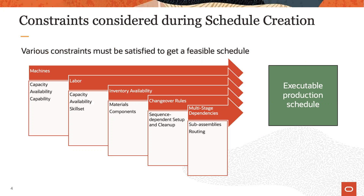While not every nut and bolt should be included in a scheduling model, there may be a few key materials and components whose availability shall be considered during schedule generation. A less obvious constraint is around changeover rules. After producing the last unit of a certain item on a machine, this machine must be prepared for the first unit of a different item, and the time it takes to do so needs to be considered so that capacity is consumed correctly.